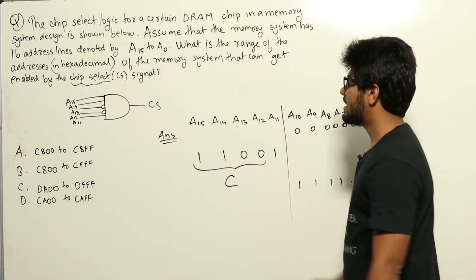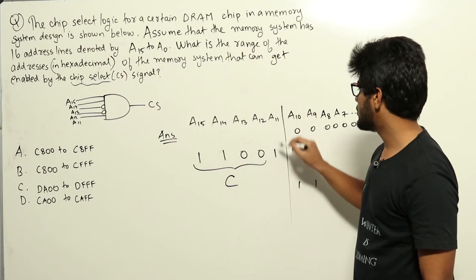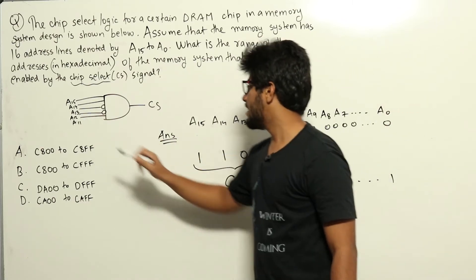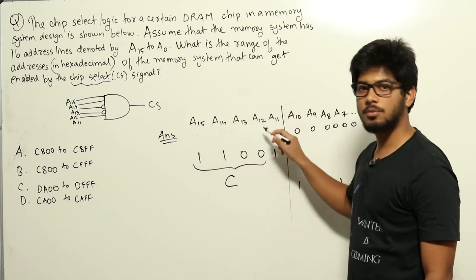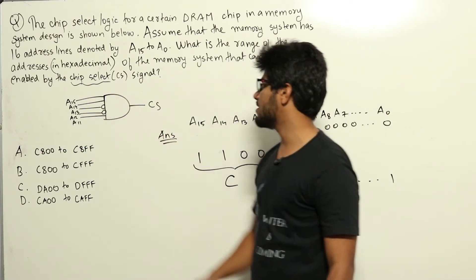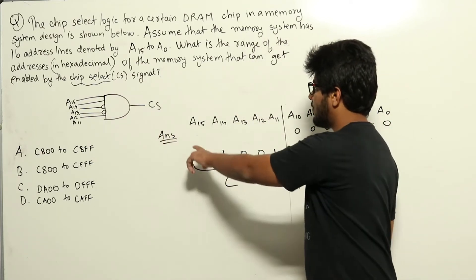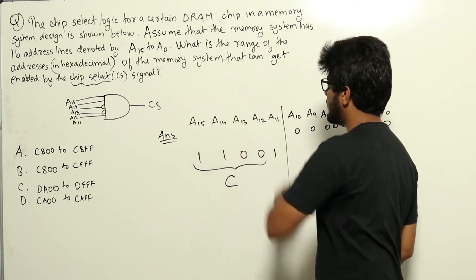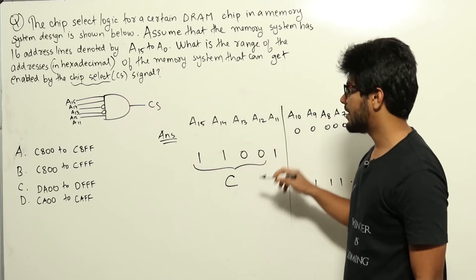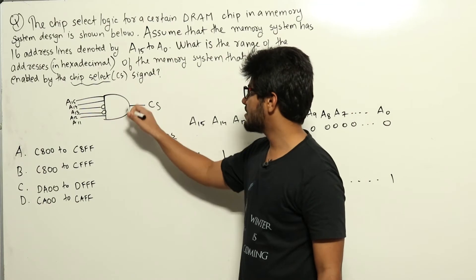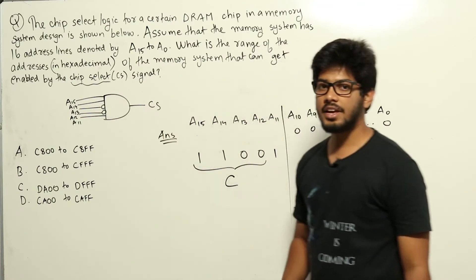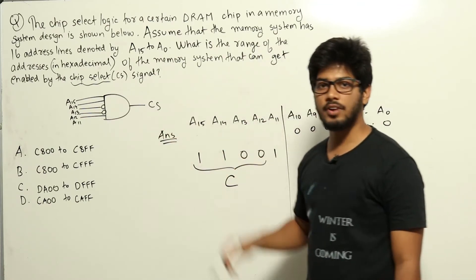So A15, A14, and A11 should be 1, and A13 and A12 should be 0 because the complement of that is being given as the input to the AND gate. When A15, A14, A13, A12, A11 take the form 11001, only in that case will the AND gate be enabled and the signal CS will be 1.